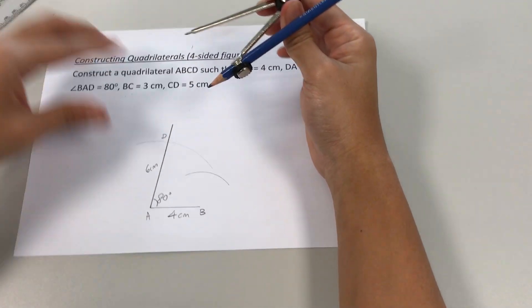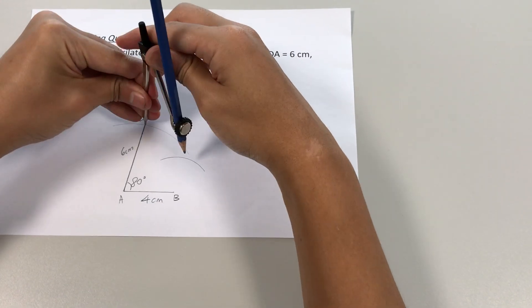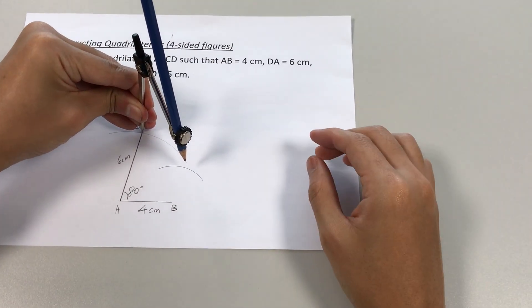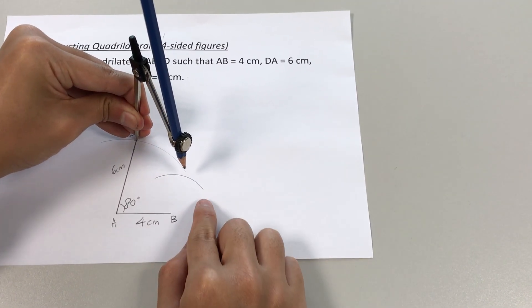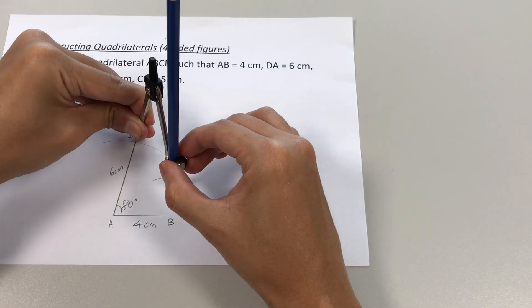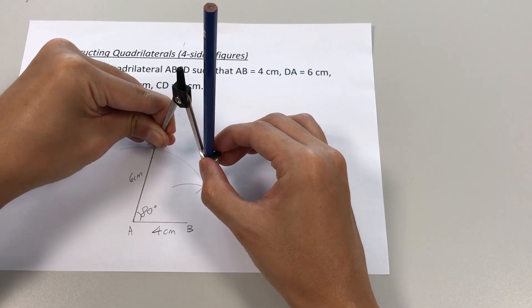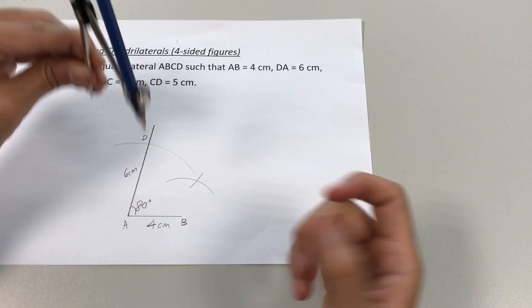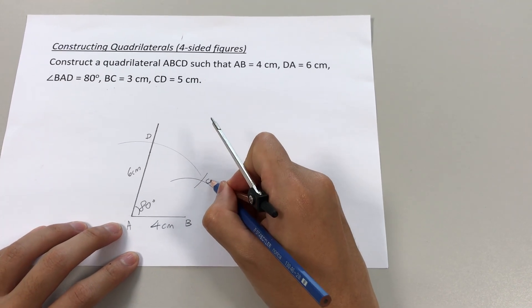We place our needle at D. Now, take note which curve we are supposed to intersect. Now, this is the one I just drew. Therefore, I want to intersect this one. The point where it intersects, this would be my point C.